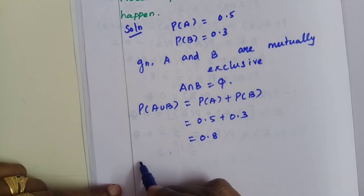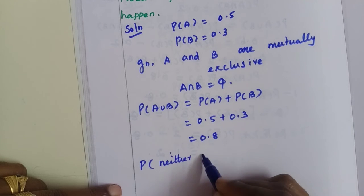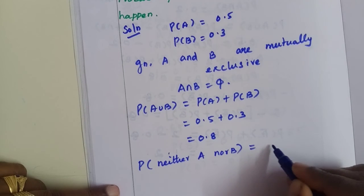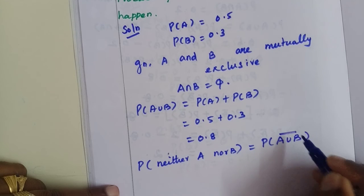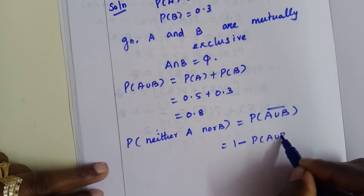Now, P of neither A nor B equals P of A union B bar, which is equal to 1 minus P of A union B.